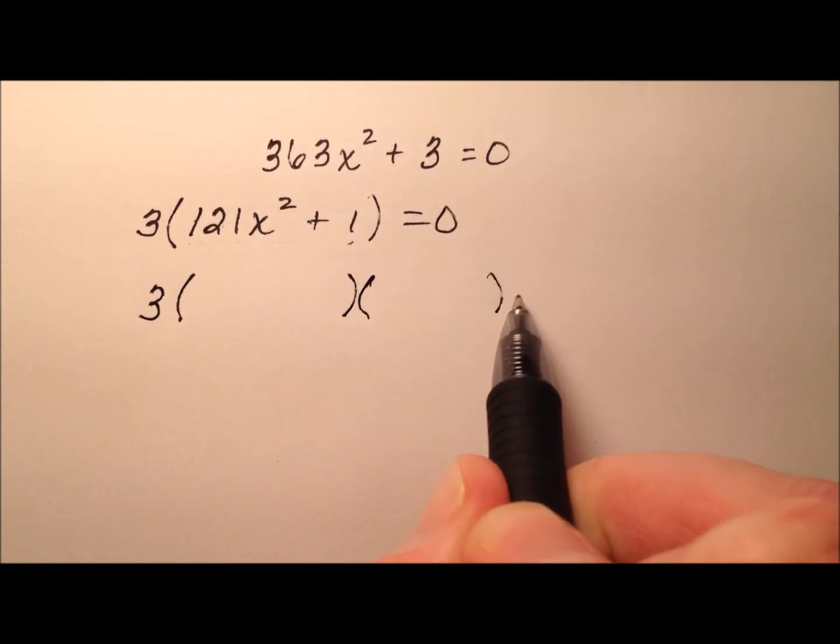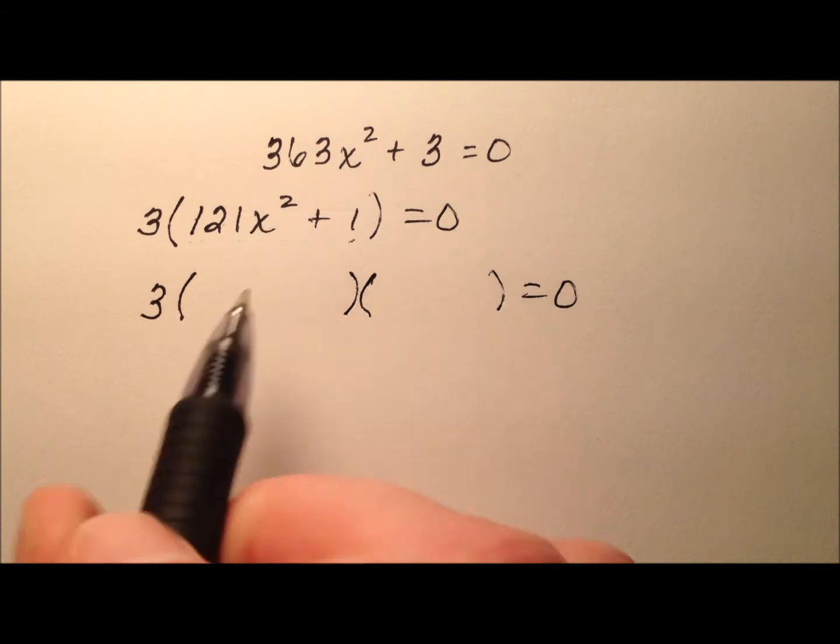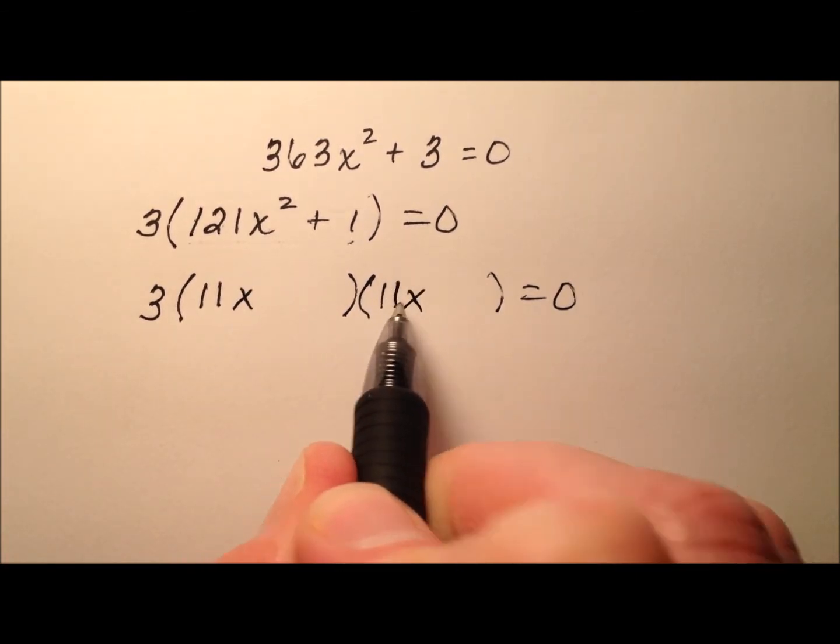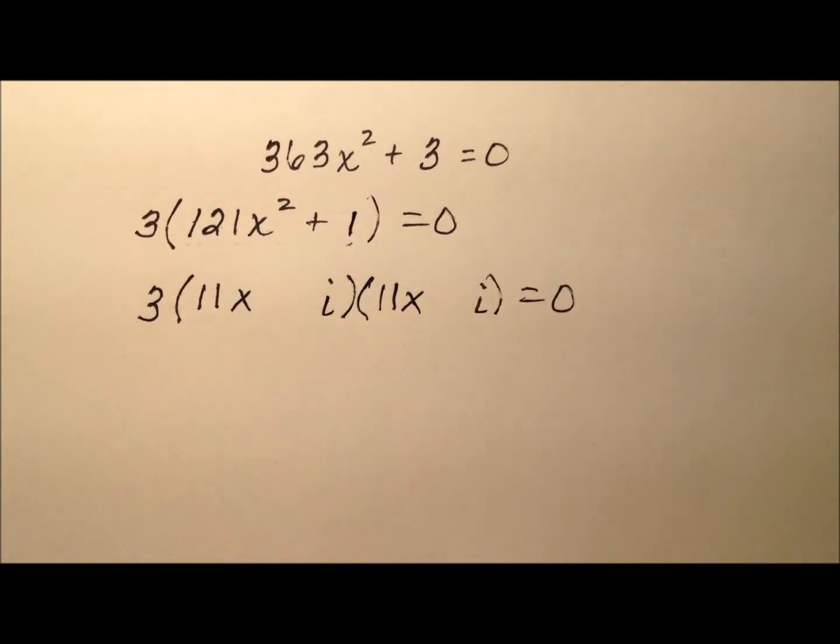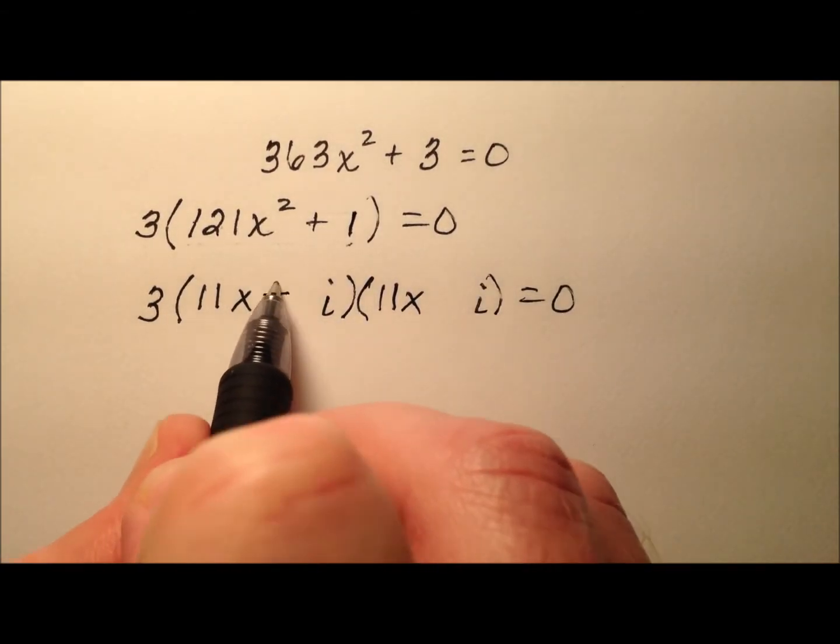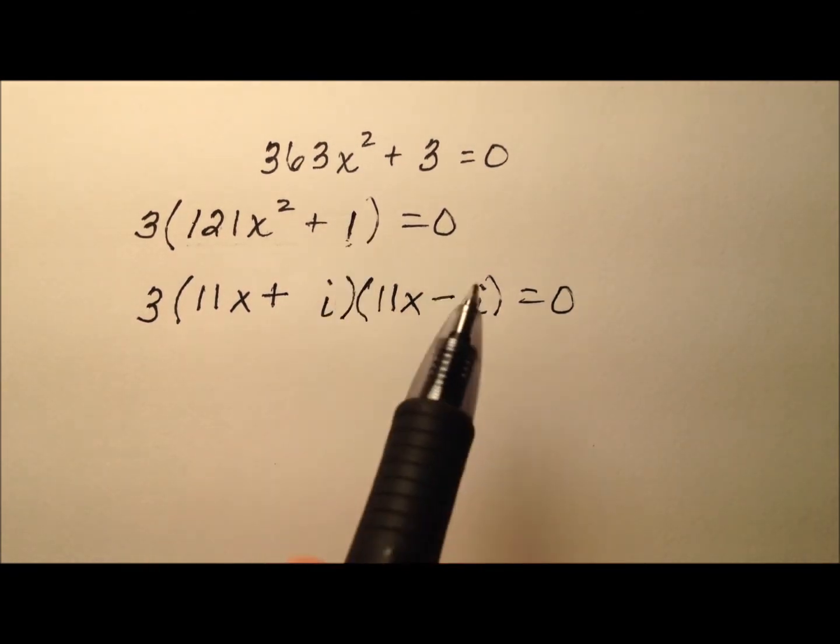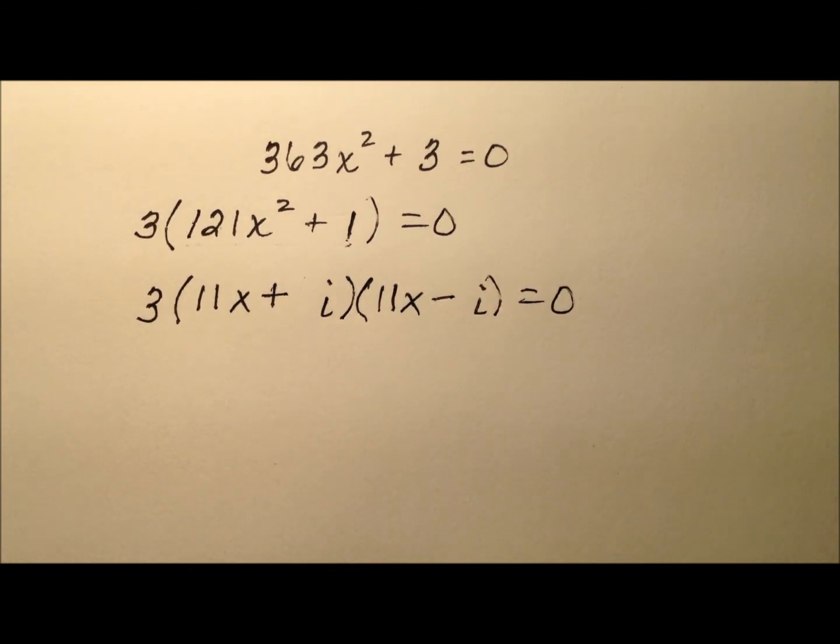So we'll set it up just like this, equals 0, and the square root of 121x squared will be 11x, so I'll go here and here. And I know this next term will have i's with it, so I'll put the i's there, and one of these is plus, one of these is minus. And the square root of 1 is 1, so I don't really need to write the ones right there, but you could.